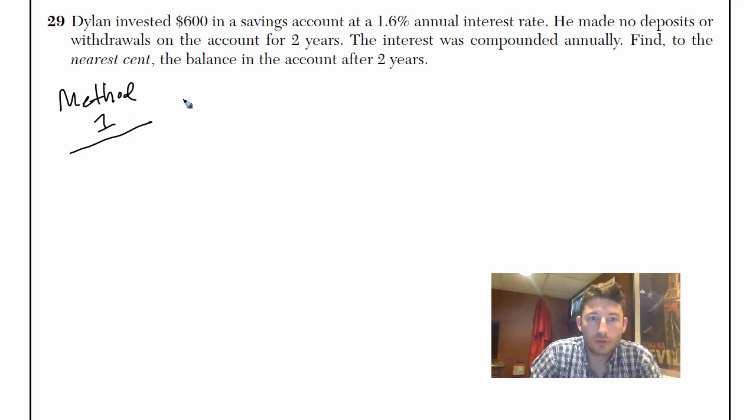In method number one, all you're going to do is put your starting value in first. Then you're going to put parentheses. And it's going to be one point whatever the interest rate is.